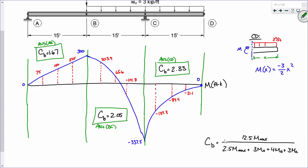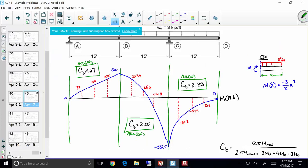That negative 114.8 would be taken as positive in your C sub B calculation. Same thing with C sub D. Take all those values as positive, and you'll get the C sub B values that you see there on the screen.